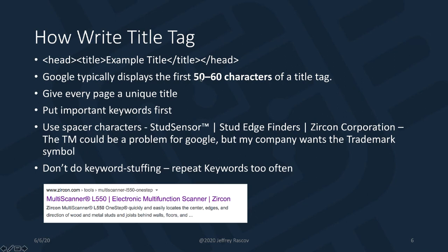Google typically displays the first 50 to 60 characters of a title tag, so I usually keep it kind of short. Every web page is unique, so you should have a unique title tag for each page — that way each page is ranked a little differently according to its content. Another important point: put the important keywords first. Here's an example of one of my title tags: I use 'stud sensor,' which is the product name, then the category 'stud edge finder,' and then my company name, Zircon Corporation, at the end. The product name is the important part — I put it first.